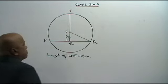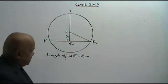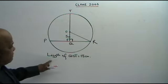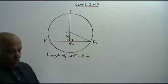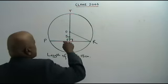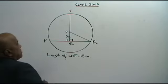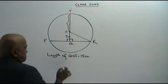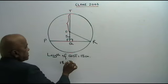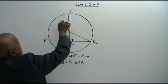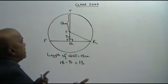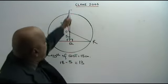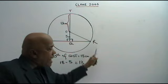You are given that OQ equals 5 centimeters, and both angles shown are 90 degrees. The length of QOT equals 18 centimeters. Therefore, the length OT is 18 minus 5, which is 13 centimeters. That is the radius of the circle. Since OT is the radius, OR is also the radius — so OR equals 13 centimeters.